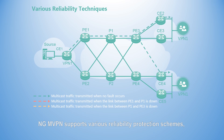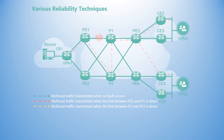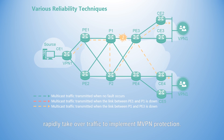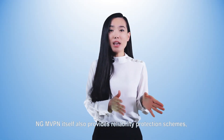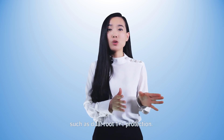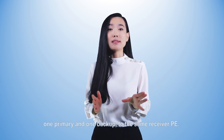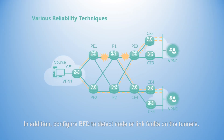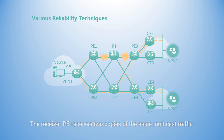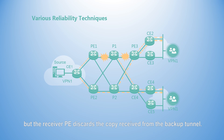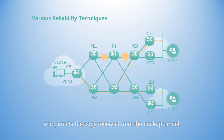NGMVPN supports various reliability protection schemes such as MPLS TE FRR for MVPN tunnels. If the link between the ingress and egress of a tunnel fails, the backup path established by TE FRR can rapidly take over traffic to implement MVPN protection. NGMVPN itself also provides reliability protection schemes such as dual route 1+1 protection. To implement this, deploy two sender PEs on the same MVPN to establish two tunnels — one primary and one backup — to the same receiver PE. Configure BFD to detect node or link faults on the tunnels. The receiver PE receives two copies of the same multicast traffic from both the primary and backup tunnels, but discards the copy received from the backup tunnel. However, if the primary link fails, the receiver PE rapidly detects the failure using BFD and permits the copy received from the backup tunnel.